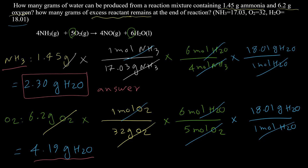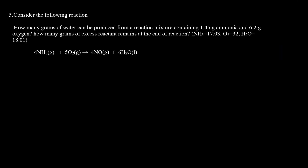For the second part — finding the remaining excess reactant — we use the value for the limiting reactant, which is 1.45 grams of ammonia. We calculate how much O₂ is actually needed for this amount of ammonia. First, convert ammonia to moles: 1.45 g NH₃ ÷ 17.03 g/mol = moles of NH₃.